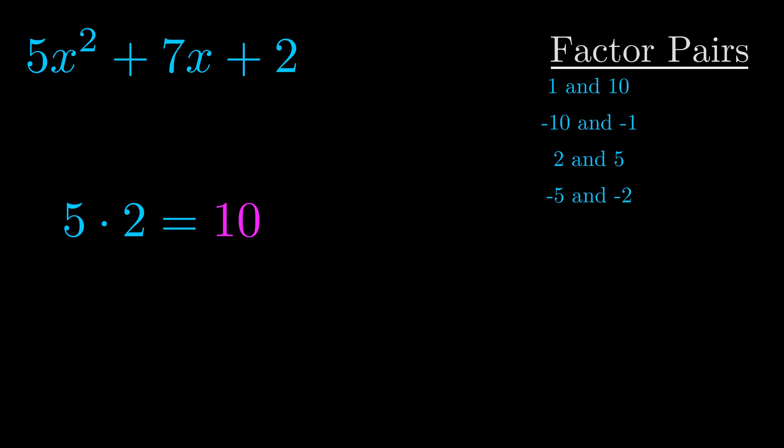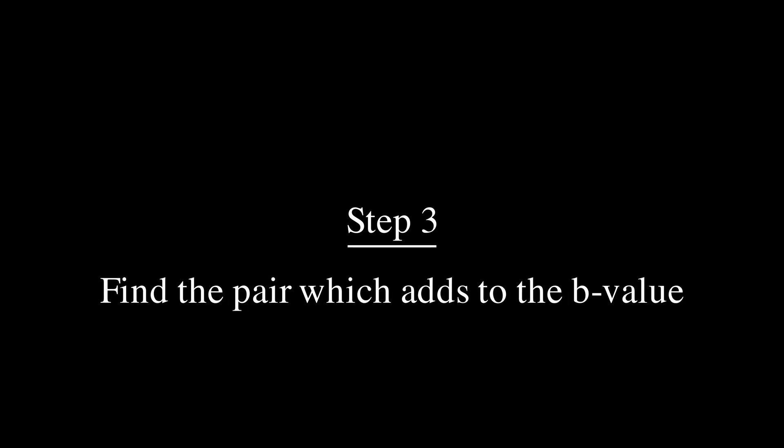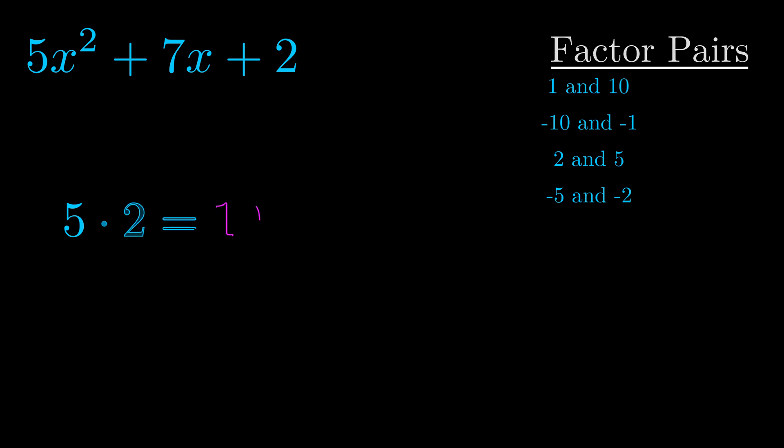Now once you have these factor pairs, the goal is to find which of these pairs adds to the b value. The b value is the coefficient on the x term. That's the middle term, the one that we haven't done anything with yet. And really this is the only factor pair that we need.